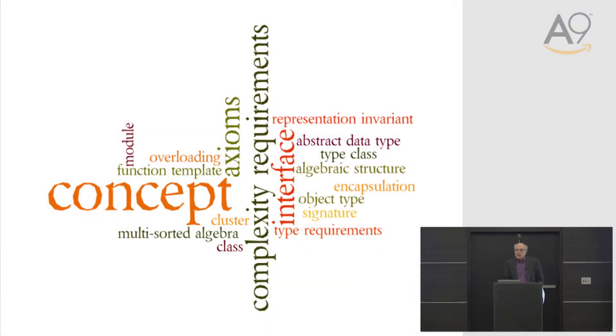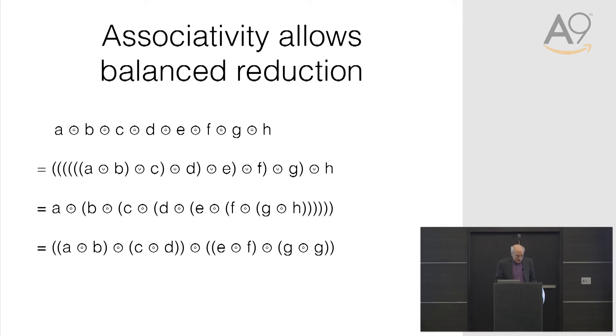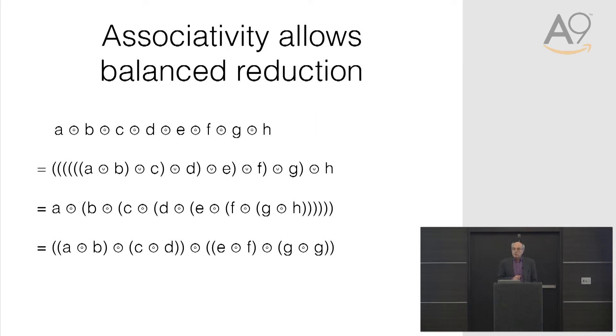What is a concept? The definition that's in Elements of Programming is pretty technical — it's more like Dave Musser's version. But it's best to start with an example, and it's best to start with an example that Alex came to back when he was smoking a cigar, roughly speaking, even before that. Imagine if you have an associative operator like addition or multiplication — that lets you regroup a sequence of operations. You move the parentheses around.